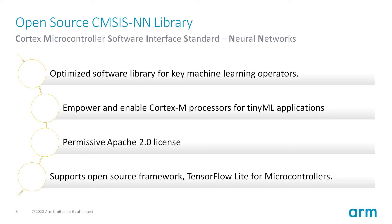The Cortex Microcontroller Software Interface Standard for Neural Networks is an optimized software library for key compute-intensive machine learning operators. It is provided by ARM with a permissive Apache 2.0 license that allows it to be used in open source and commercial projects.